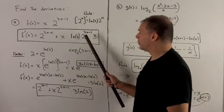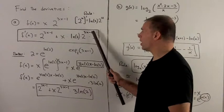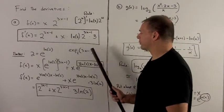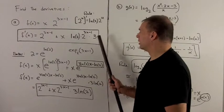So we do that. I put in for my u, 3x minus 1, and then I have to take the derivative of the inside. So the derivative of 3x minus 1 is going to give me 3.